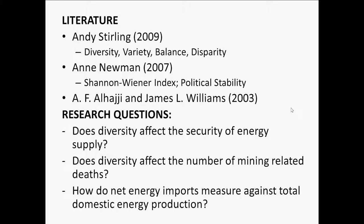Newman takes a look at the Shannon-Wiener index with an added measure of political stability — she takes the fraction of oil or coal imports from a specific country and rates that country in terms of political stability. The Shannon-Wiener index looks at the number of different species or variables within a dataset — so the number of different power plants in the US energy sector, whether geothermal, nuclear, or others — and counts the frequency distribution of those different types.